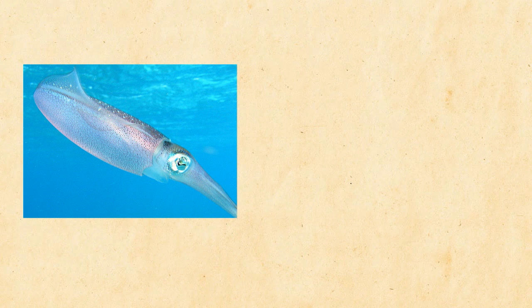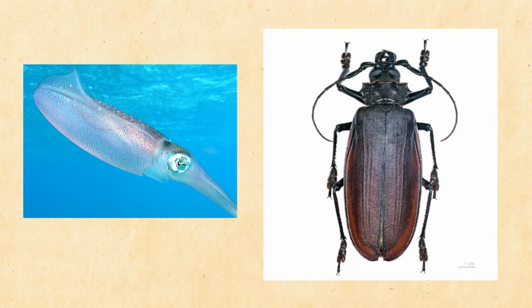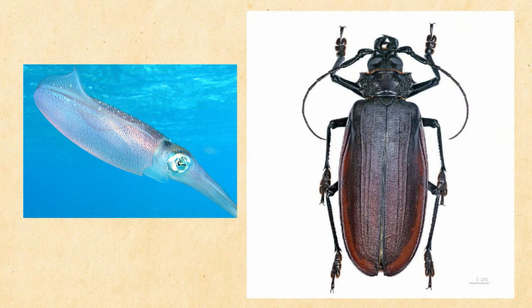Mollusks which include squid or octopus, arthropods which include the insects, and echinoderms which are starfish and sea urchins.